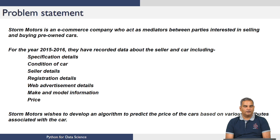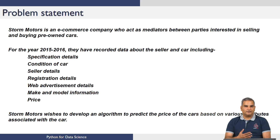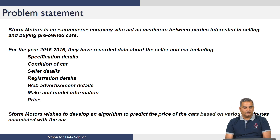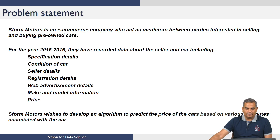Storm Motors wants to develop an algorithm to predict the price of cars based on various attributes. If a seller is asking for a price, you can put the car's attributes into the model and get a predicted price. If the seller is asking too much, you can tell them they are unlikely to sell at that price. Similarly, if a buyer bids too low, you can show the model's results and explain the price is too cheap — optimizing the transaction so both parties are happy.